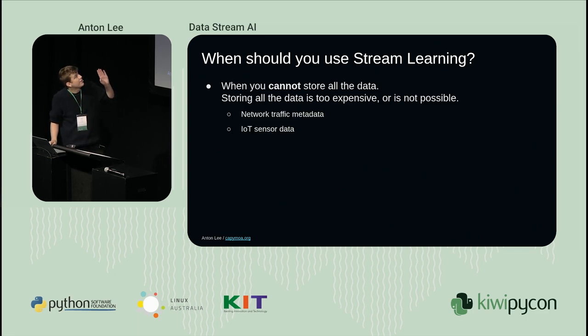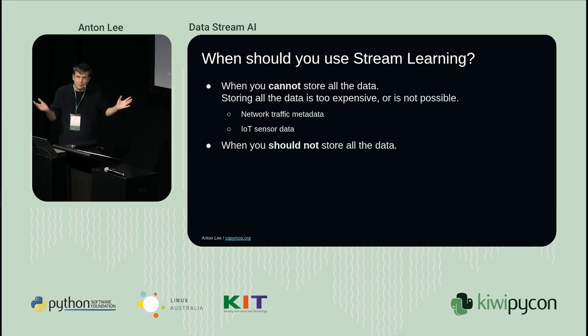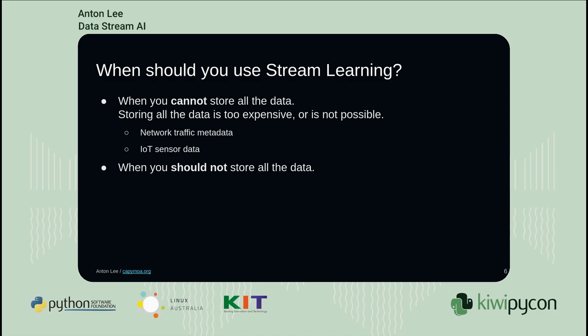Things like network traffic metadata or IoT sensor data might not be reasonable to store all of. And then the second case where you might not want to store all the data is when you have privacy concerns. There's plenty of data you can collect that you shouldn't keep around, but you might still want to make decisions on that data - and that's where data stream learning might be useful.